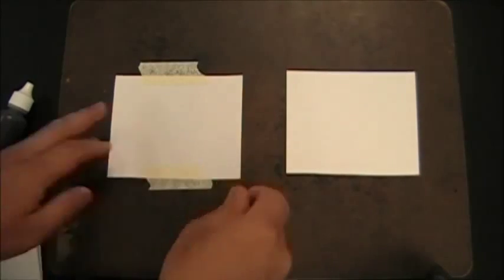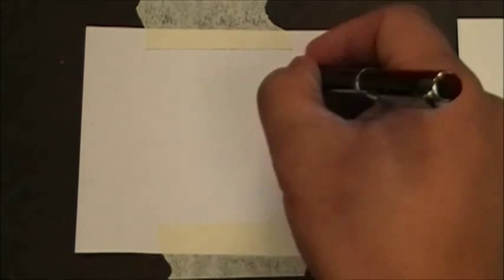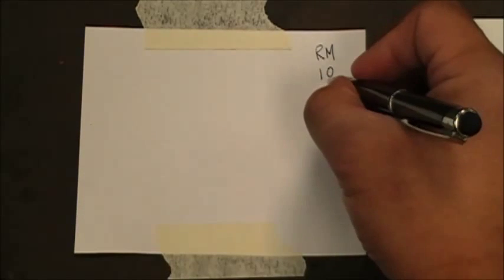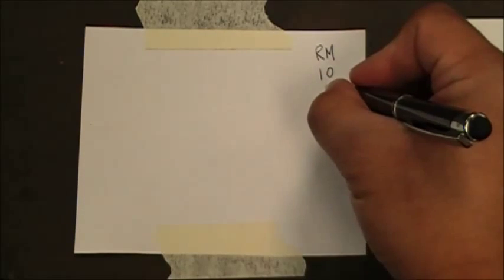To begin this lab, flip over your whiteboard. Take two index cards and tape them side by side. Next, label your index cards with your initials, your table number, and the angle at which you will be performing the blood drop activity.